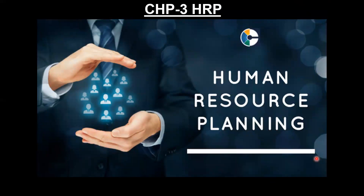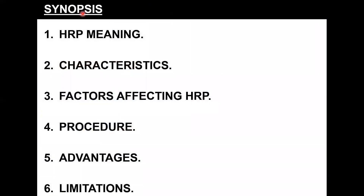Unit one talks all about human resource planning. In previous lectures we understood the meaning of HRP — how we estimate the manpower demand and manpower supply and bring both to a desirable level. We studied the characteristics of HRP, factors affecting it such as internal and external factors, and began the procedure of HRP. The focus for today's lecture is to understand the remaining process of how human resource planning takes place.